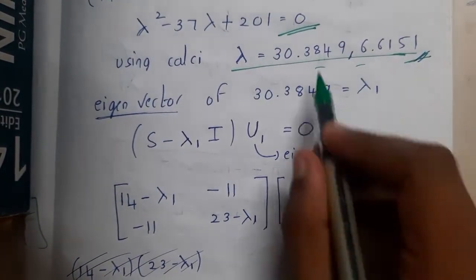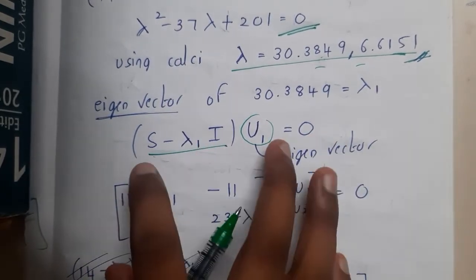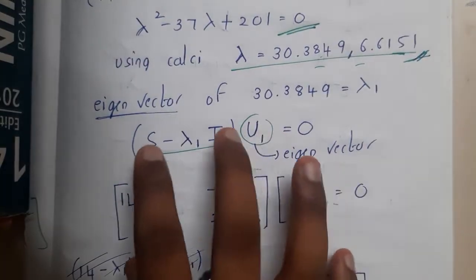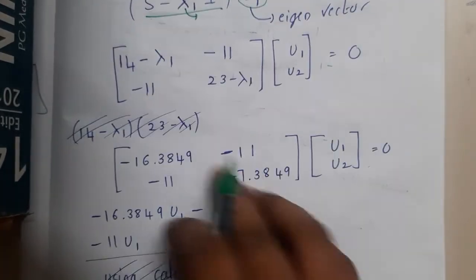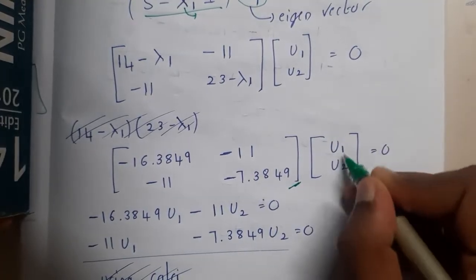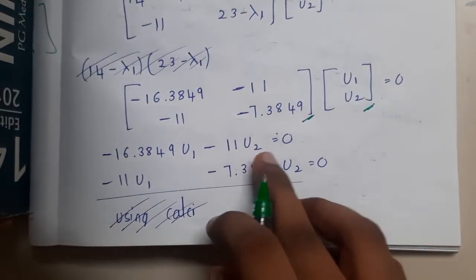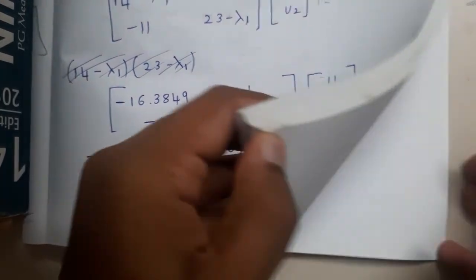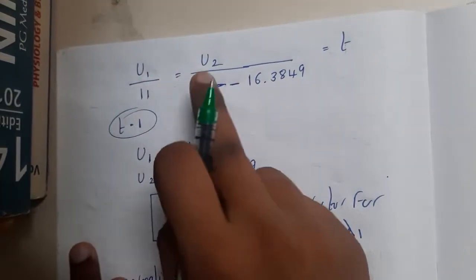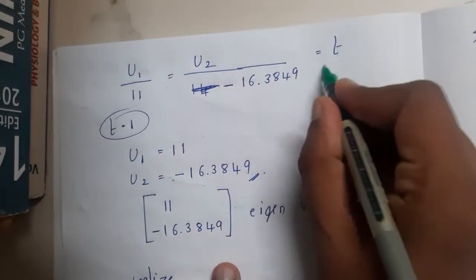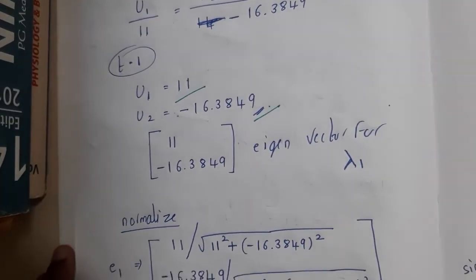Using these eigenvalues you need to find the eigenvectors. The formula is (S minus lambda·I) times u equals zero. Substitute the values of S, lambda 1, and I, and solve the resulting matrix. Separating u1 and u2, you get: minus 16.3849·u1 minus 11.11·u2 equals 0. Sending one term to the other side and dividing: u1 by 11 equals u2 by minus 16.3849. Assuming t equals 1, substitute to get the values of u1 and u2 as the eigenvectors.